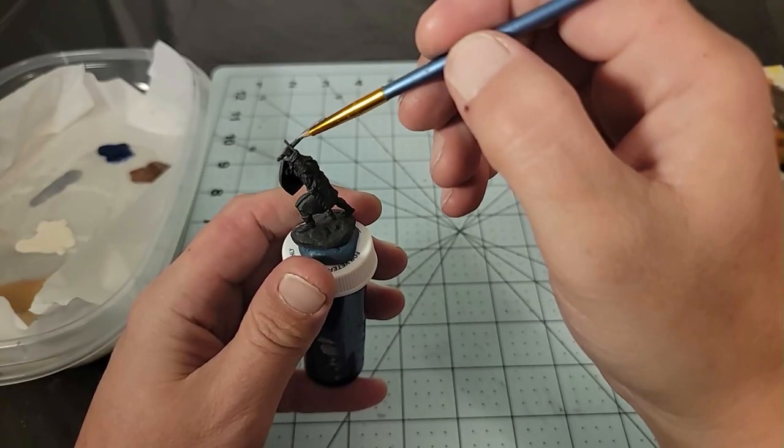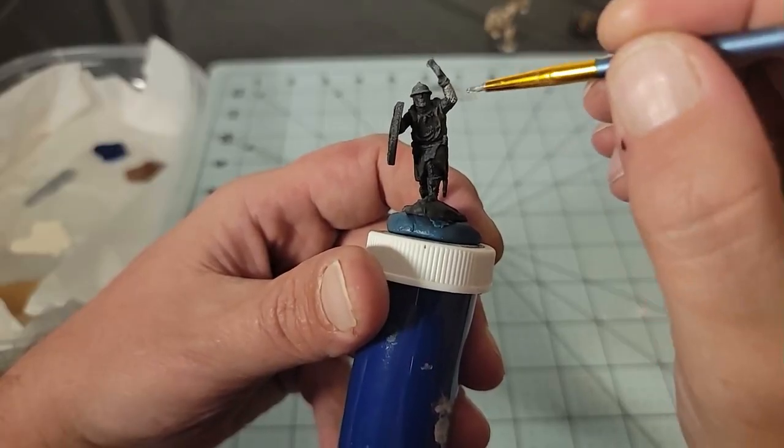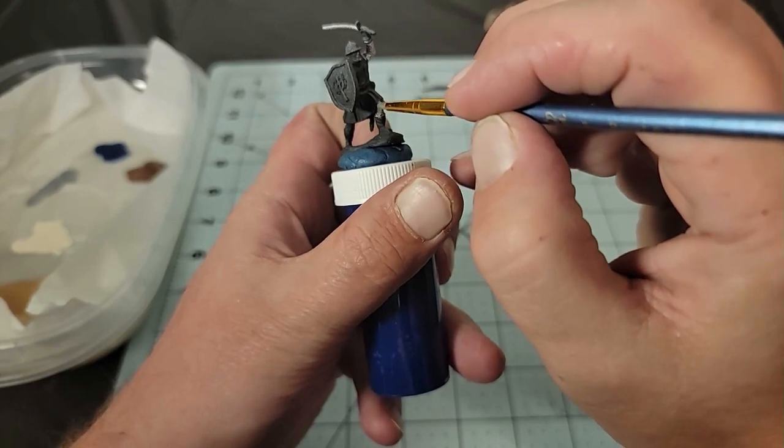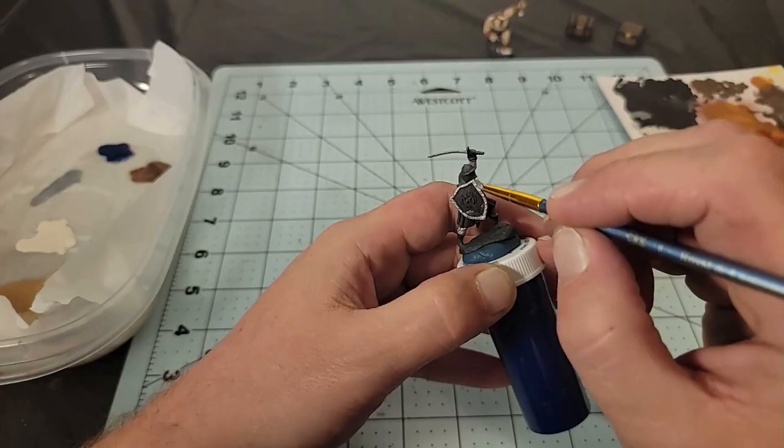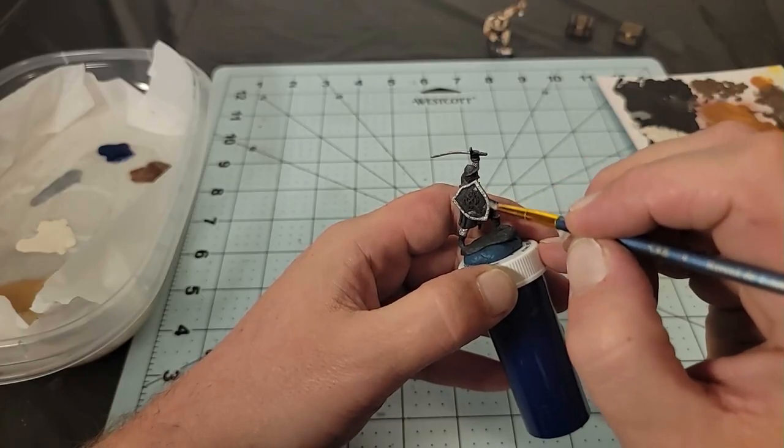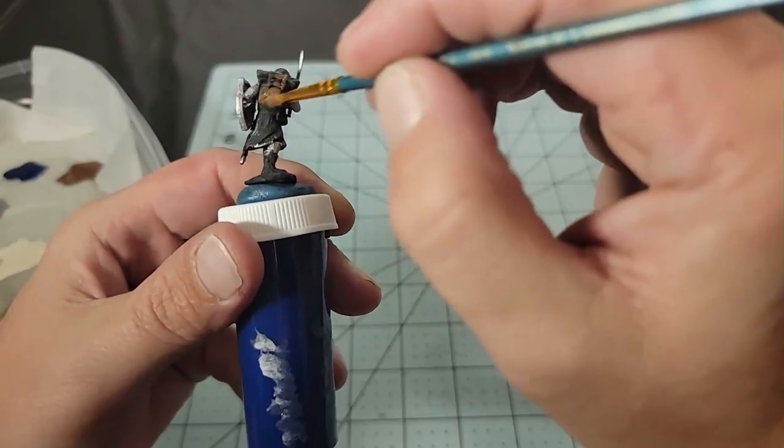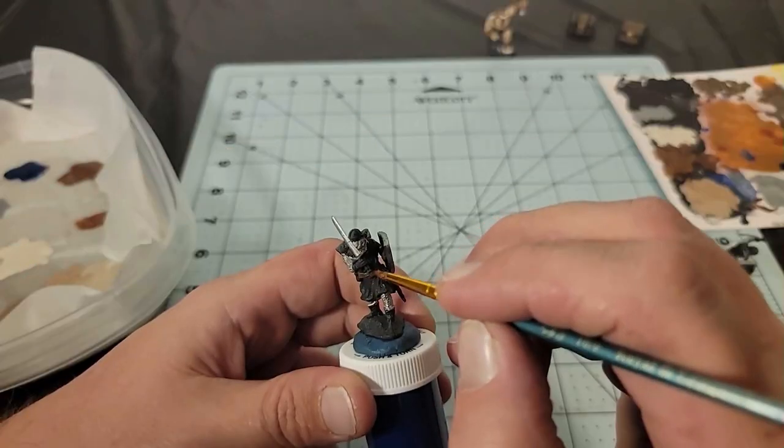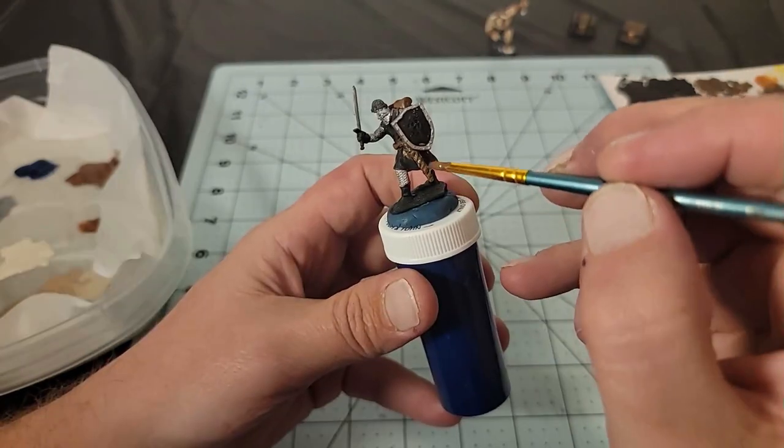For the two soldiers, I'll be using mostly the same colors. First, using the silver from earlier to paint their swords, their chainmail, and the outer edges of their shields. Next, the parchment for their faces and Nutmeg Brown for their belts, shoes, and the backpack of the second soldier.